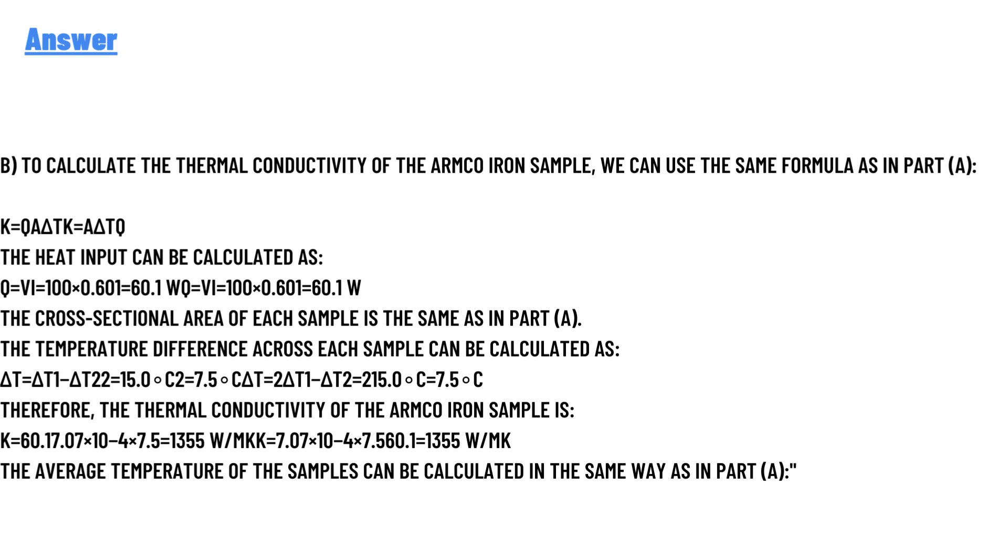Part B: To calculate the thermal conductivity of the Armco iron samples, we can use the same formula as in Part A. The formula is given below. The heat input can be calculated by the formula given below. The cross-sectional area of each sample is the same as in Part A. The temperature difference across each sample can be calculated as the formula given below.